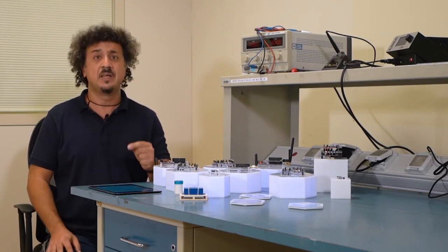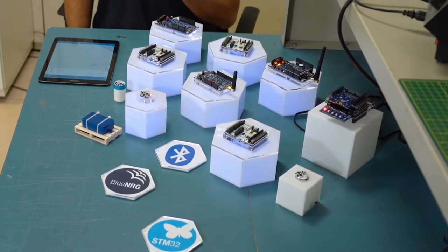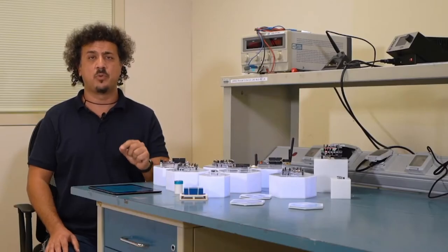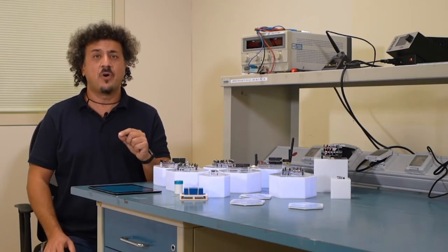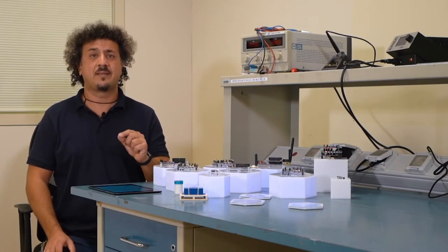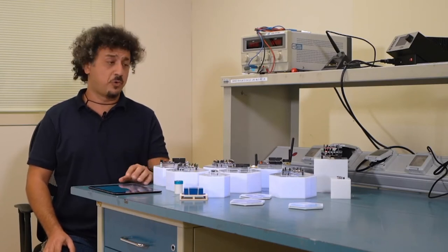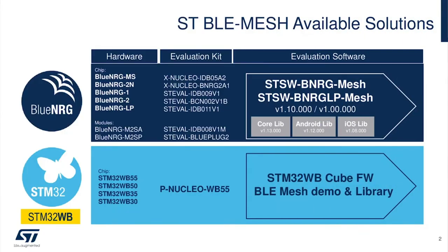And last but not least, the possibility to manage the network with your mobile phone using standard Bluetooth interface. So let's have a look at our solution. The ST BLE Mesh is available across two platforms: the STM32WB series, a system-on-chip dual-core with Cortex M4 dedicated for application, and the Blue Energy Family system-on-chip processor.